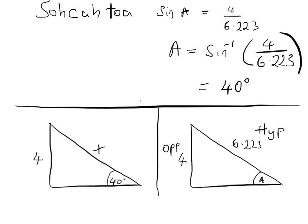In most calculators, you press the shift key or second F key before pressing sine, then key in the number you're finding the sine inverse of. You'll find that the angle is 40 degrees. To summarize both problems: we labeled the sides given, identified opposite over hypotenuse, used sine equals opposite over hypotenuse to form an equation, and solved it. You'll only ever use sine inverse, cos inverse, or tan inverse when you're trying to find the value of an angle.